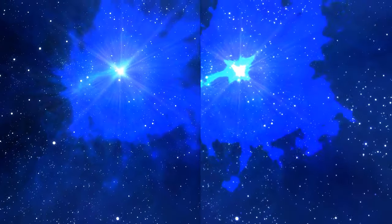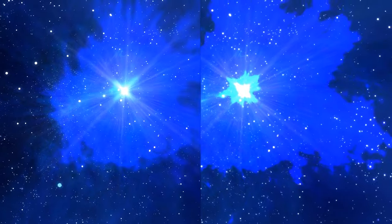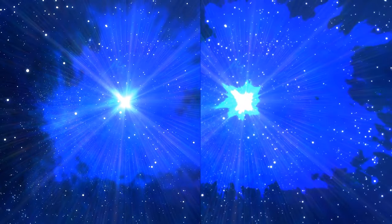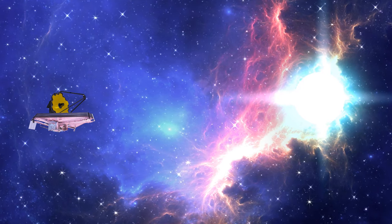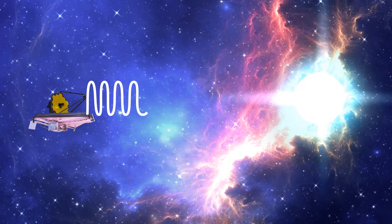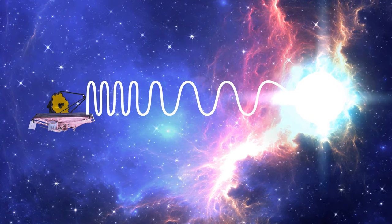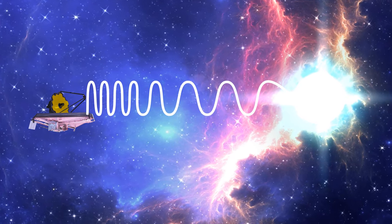Experts can measure the true brightness of supernova by observing the time scale over which their light brightens and fades. Then, they compare how bright these supernovae appear and how bright they really are. And it helps figure out how far away they are.